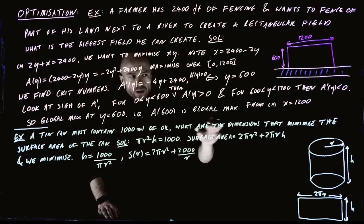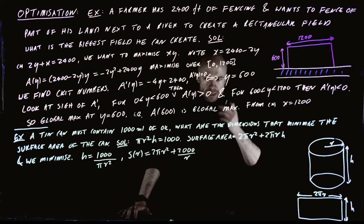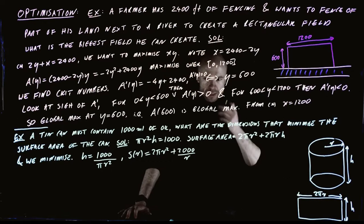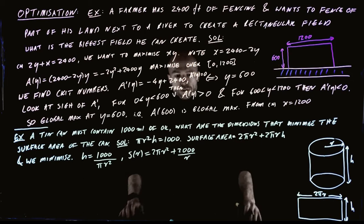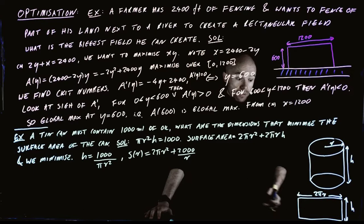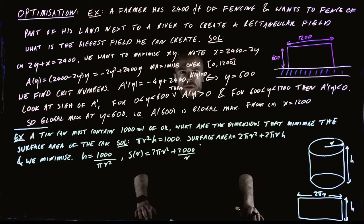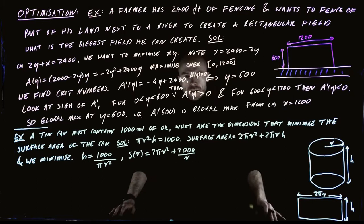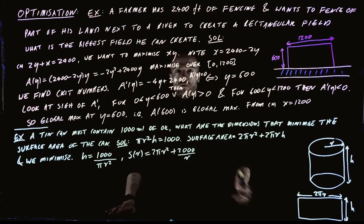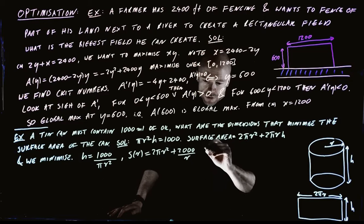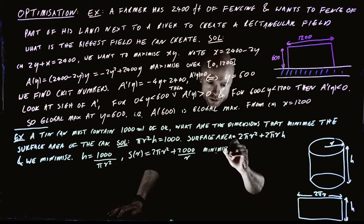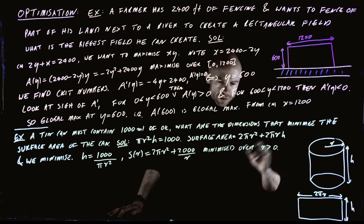What range of r can we have? In principle any positive r — you could have a radius of 1 meter or 100 meters and still hold 1,000 milliliters, just with a very thin can. Those extreme shapes are unlikely to be optimal, but to be complete we minimize S(r) over all r greater than 0.